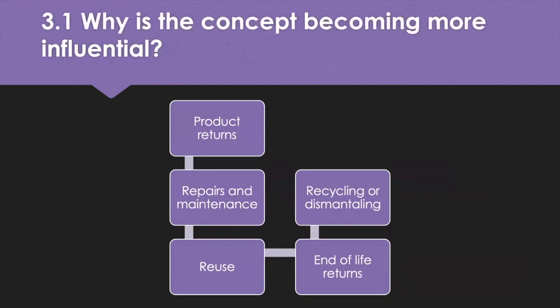Why is the concept of reverse logistics becoming more influential? Reverse logistics is the process of moving goods from their final destination for the purpose of capturing value or for proper disposal. The final destination may be the end user, the consumer, or an organizational intermediate user at the point of consumption. The point of origin may be a manufacturer, retailer or designated place of capturing value or proper disposal, like a recycling facility. Reverse flows have always occurred in supply chains for decades.